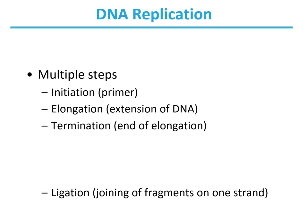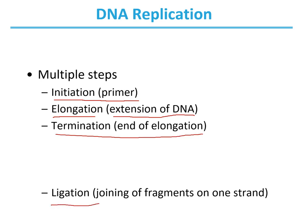DNA replication involves multiple steps. There's an initiation step where a primer is required. There's elongation, where the DNA is extended from the primer. There's termination, where elongation ends. And there's ligation, where multiple small pieces of DNA are ligated together. This entire process involves copying a complementary parent strand, and the copy is referred to as the daughter strand.